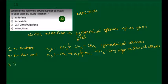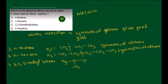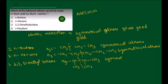Third, we have 2,3-dimethylbutane. We can see that 2,3-dimethylbutane is a symmetrical alkane, so this will also give a good yield by Wurtz reaction.